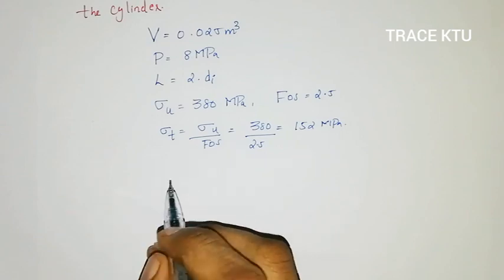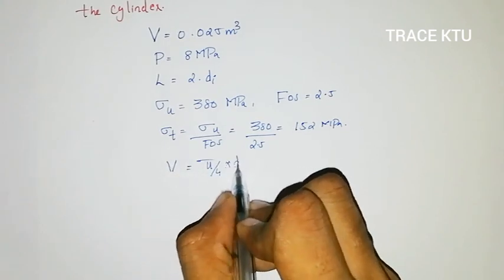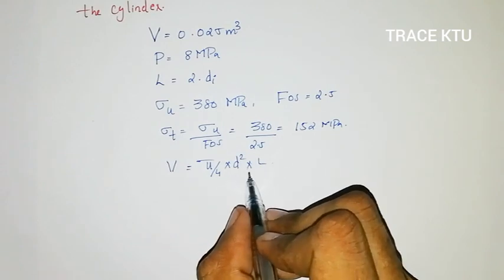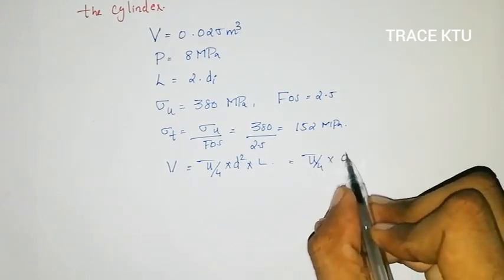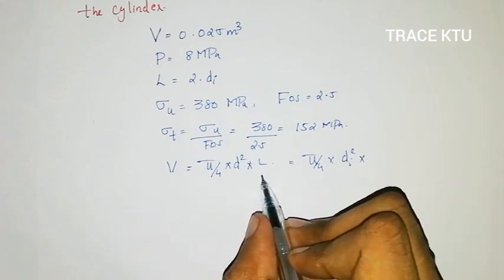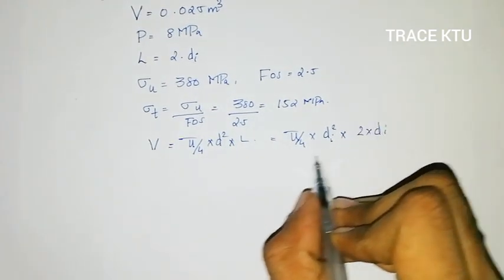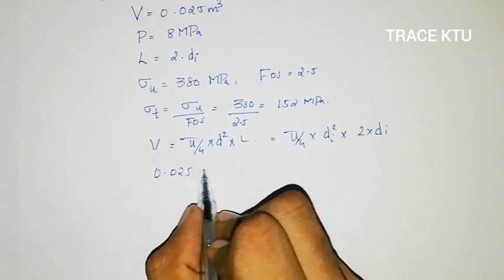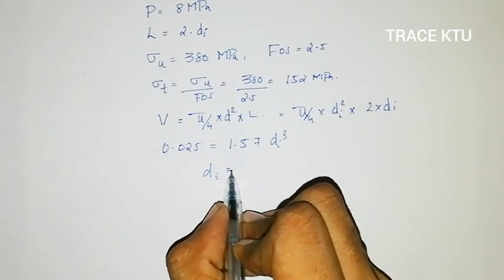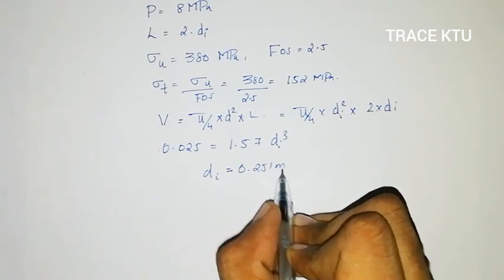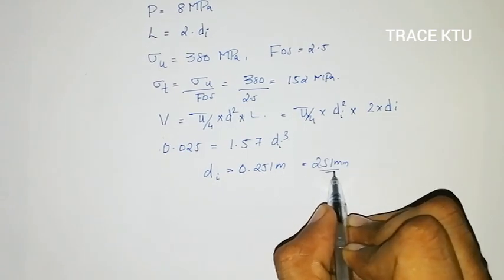Now we determine the dimensions of the cylinder. We have the volume equation: V = (π/4) × di² × L. Substituting the condition L = 2di, we get 0.025 = 1.57 × di³. Solving, di equals 0.251 meters.